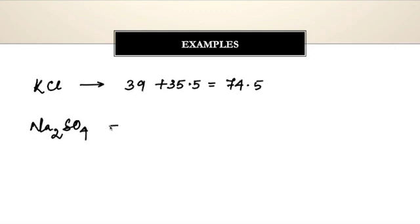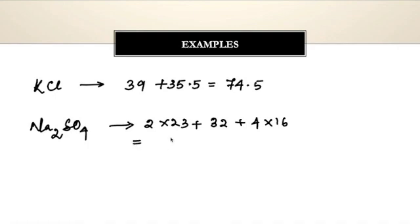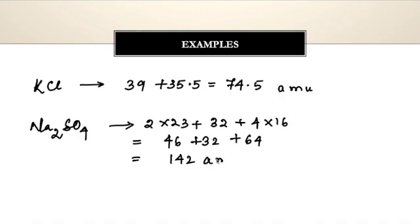We can also take Na2SO4 (sodium sulfate): sodium has atomic mass 23, sulfur has 32, and oxygen has 16. So the formula mass is 2 × 23 + 32 + 4 × 16 = 46 + 32 + 64 = 142. The units are AMU, or simply 'u'. These are the formula masses of ionic compounds. I hope all of you have understood how to calculate the molecular mass and the formula mass.